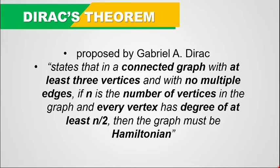Dirac's Theorem was proposed by Gabriel A. Dirac. It states that in a connected graph with at least 3 vertices and with no multiple edges, if n is the number of vertices in the graph and every vertex has degree of at least n over 2, then the graph must be Hamiltonian. So we can use Dirac's Theorem in order to determine if a graph is Hamiltonian.